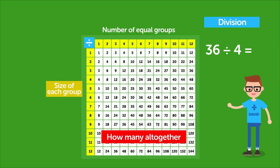We know that each group has 4 in it, so we read down the yellow column until we find 4. Then we read across until we find the white square 36, because that's how many we have all together.